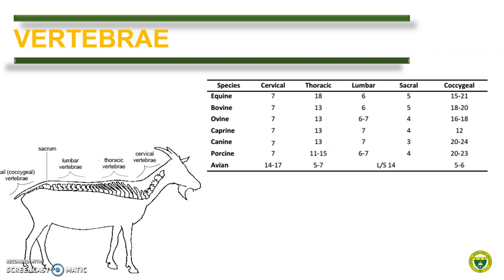In mammals, there is a constant seven cervical vertebrae. This is not true in birds, as shown here. The number of cervical vertebrae limits the movement of the head. Thus, in the case of birds, they can freely rotate and move their neck as compared to mammals like our domestic animals.